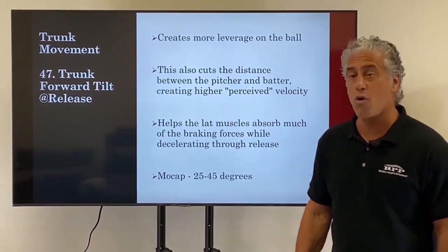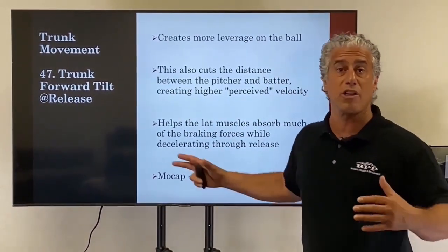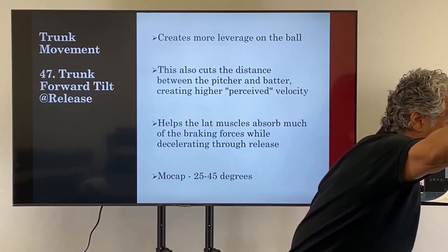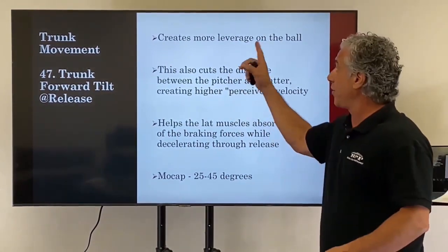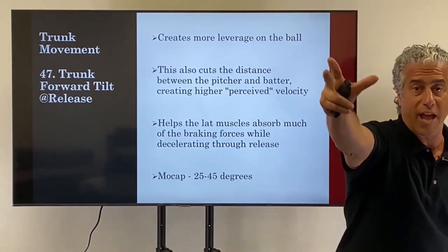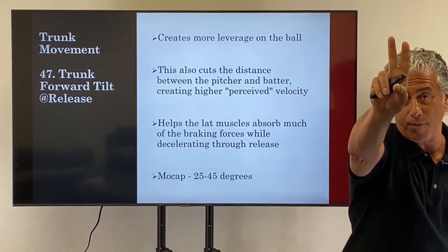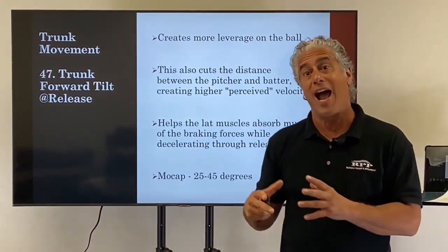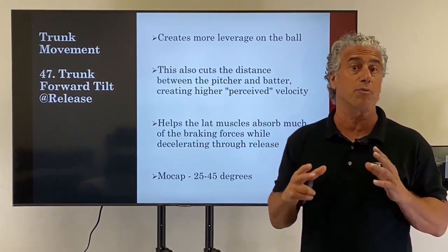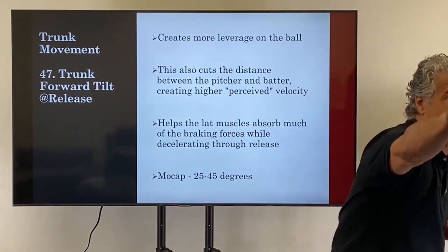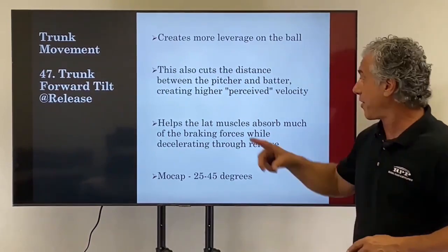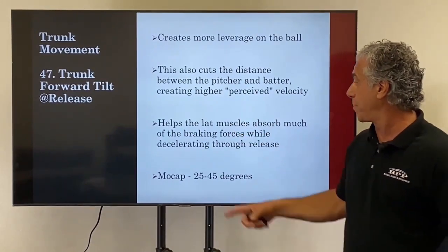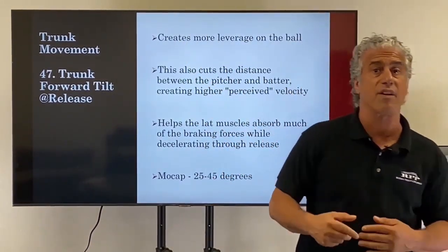Number 47: trunk forward tilt at release. This helps create more leverage on the ball, exemplified by an athlete getting out in front over that front leg at release. It gives a bigger leverage point on the ball and helps stay on the ball longer, which can give better spin — whether backspin for more vertical break — and it also gives the pitcher an advantage by giving more perceived velocity. The closer he can get to the batter before releasing the ball, the less time the batter has to react. It also helps the lat muscles absorb much of the decelerating forces of the arm.